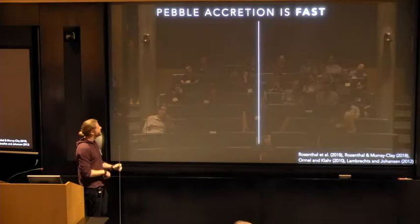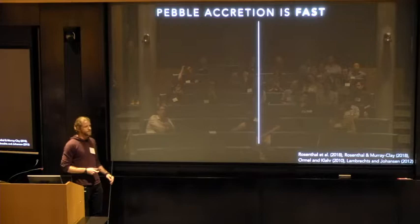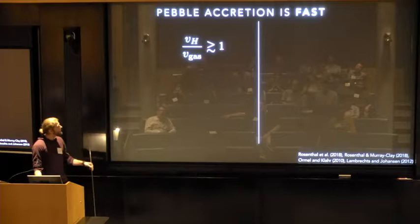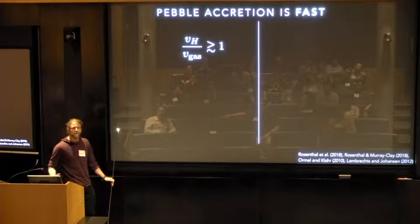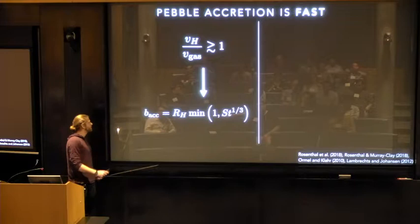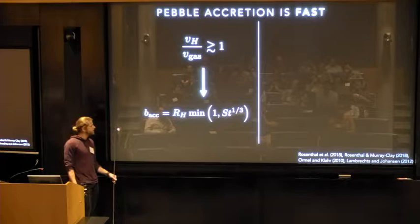So one of the reasons that people were so interested in pebble accretion in the beginning is that it's fast. It solves a lot of the timescale issues that come along with planetesimal accretion. So just to give you an idea of some numbers, if you end up at core masses such that the hill velocity is larger than the local gas velocity, and by the hill velocity here I simply mean the orbit velocity at the core's hill radius, which you end up with, as I said before, impact parameters that are of order the core's hill radius.